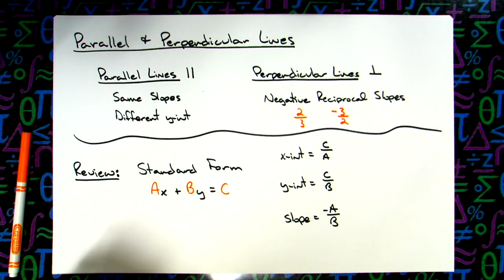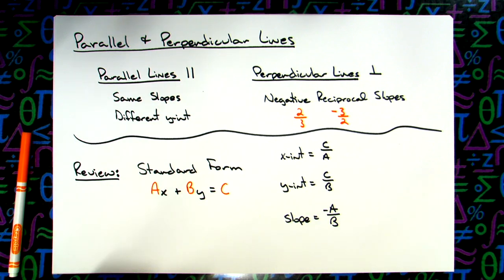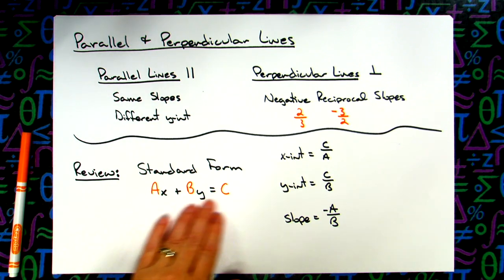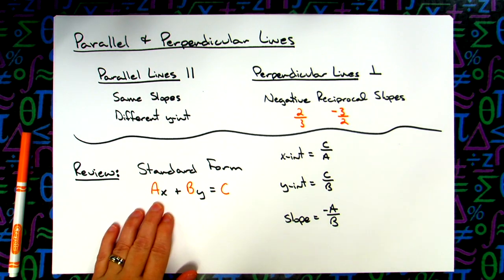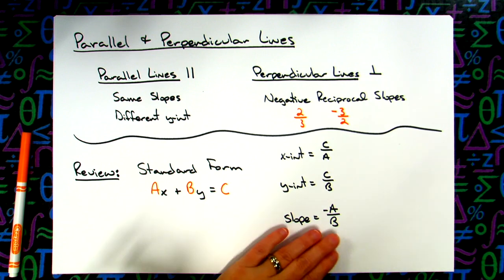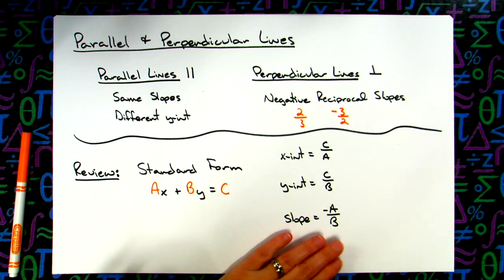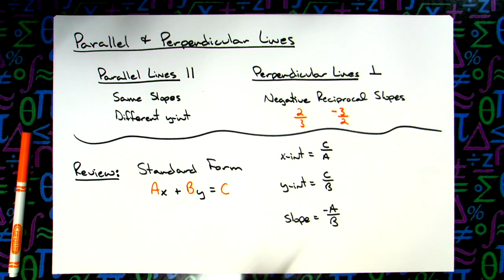Those would be three formulas to memorize, but conceptually, if you understand what an x-intercept and y-intercept are, it's pretty straightforward where they come from. We could solve this equation as a literal equation and see that the slope is negative a over b — let's take a few minutes to do that, since it won't take very long.